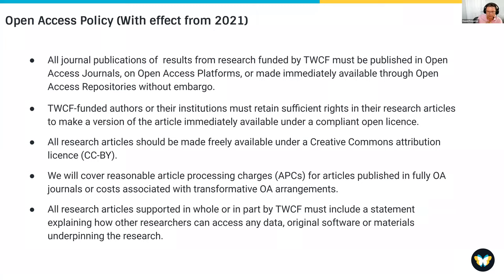This is a really important part of Plan S and one that we stand behind — if you're an author and you've published something, you should retain the rights to that article so you can make it open access. It can be made freely available under a Creative Commons CC-BY license. If you have to publish in a journal that requires an article processing charge (APC), we will support that, providing it's in a fully open access journal or one with a transformative arrangement. We also encourage people to share data and software and to make clear where readers can access that data.